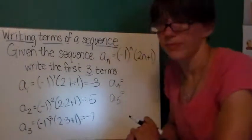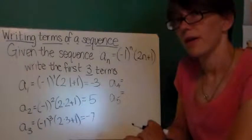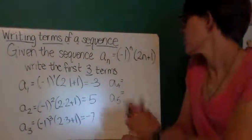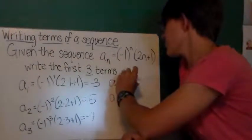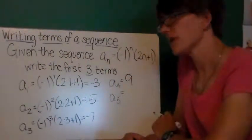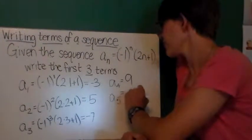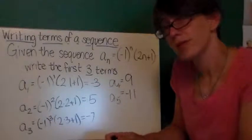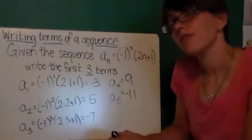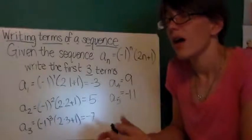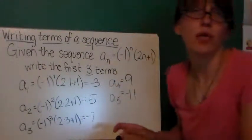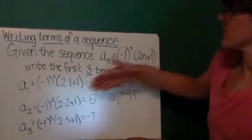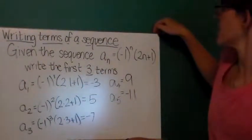Think about it for a little bit. Here's our function rule, and think about what pattern you're seeing emerge. Hopefully you've said that a sub four is nine, and a sub five is negative eleven. You'll notice that the signs alternate here, starting with negative and then turning positive. If you see that in a sequence, generally you can suspect that it has negative one raised to some power as part of the sequence formula. So that's, again, how you write the terms of the sequence.